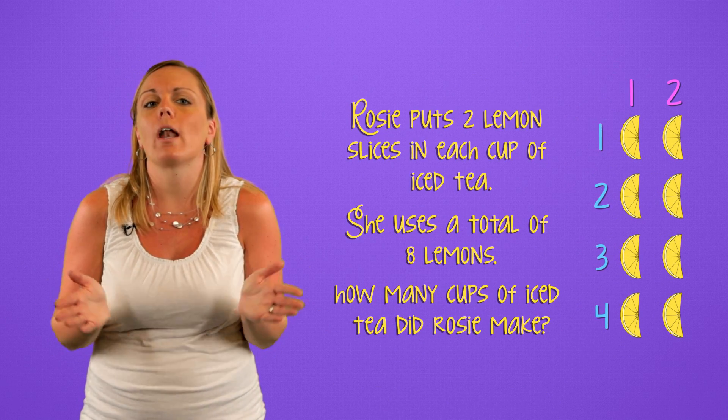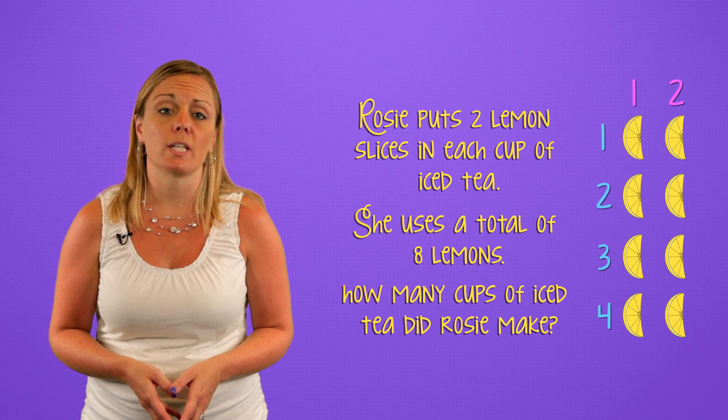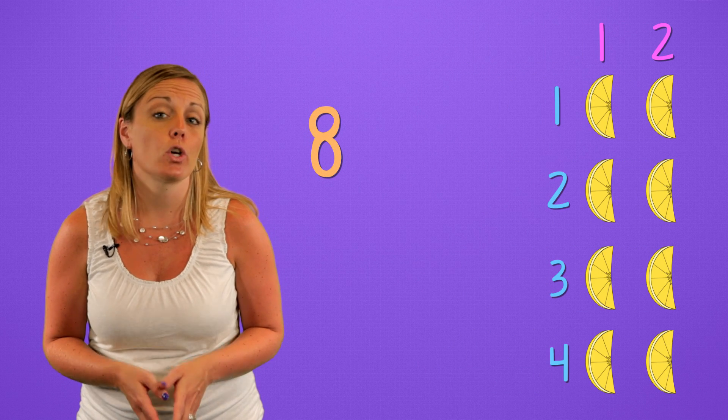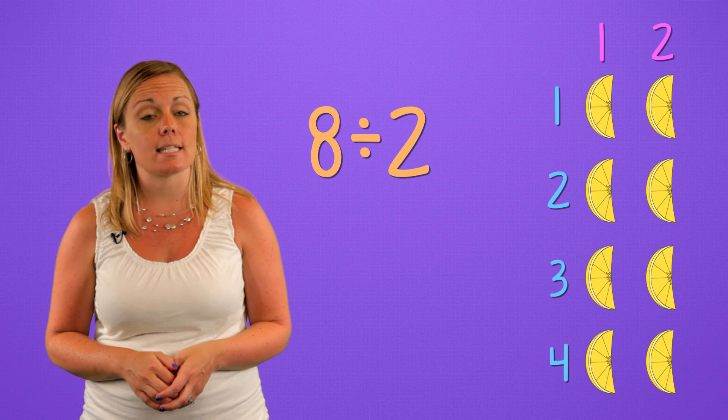But what is the unknown here? In the original problem, what are we trying to solve? We're looking for the number of cups Rosie made. And in this example, that is the eight total lemon slices, divided by the two lemon slices in each cup.